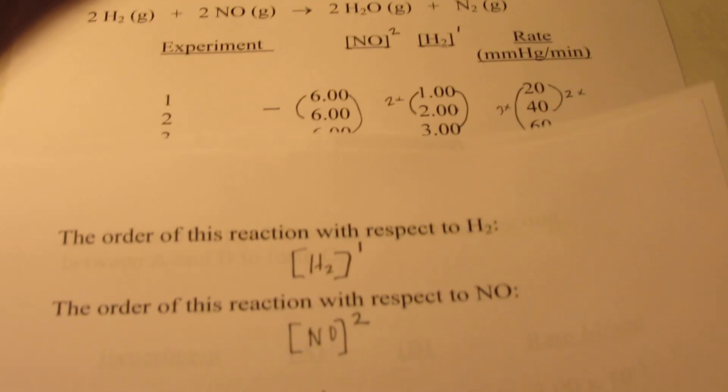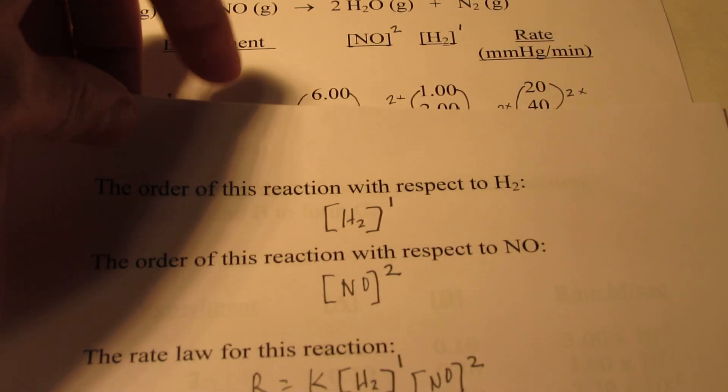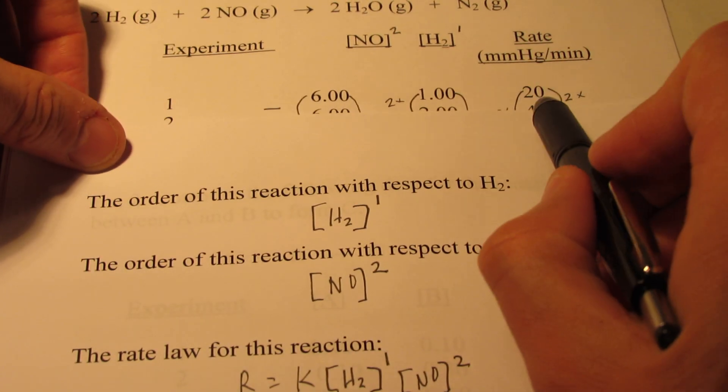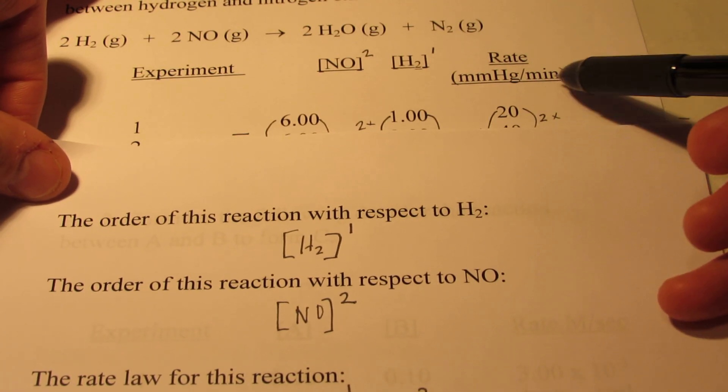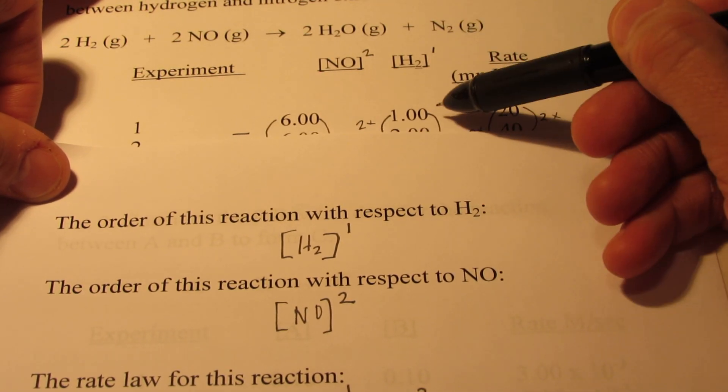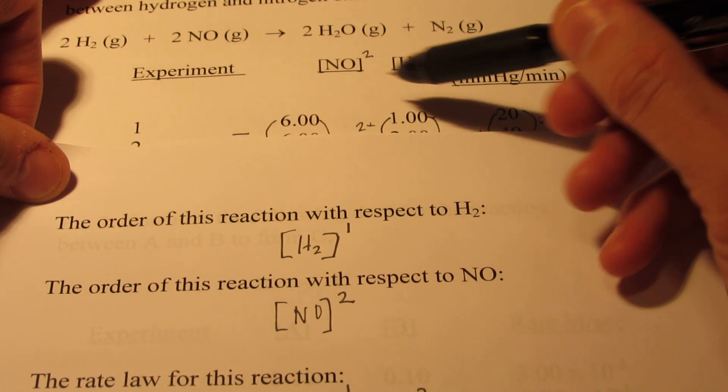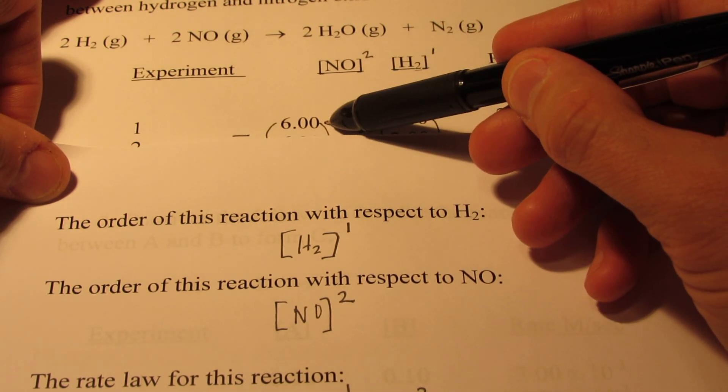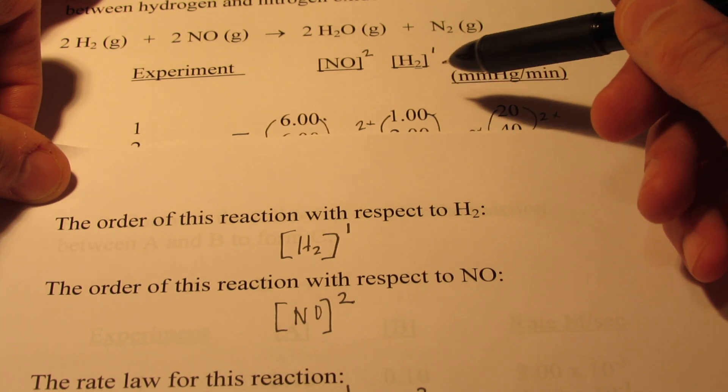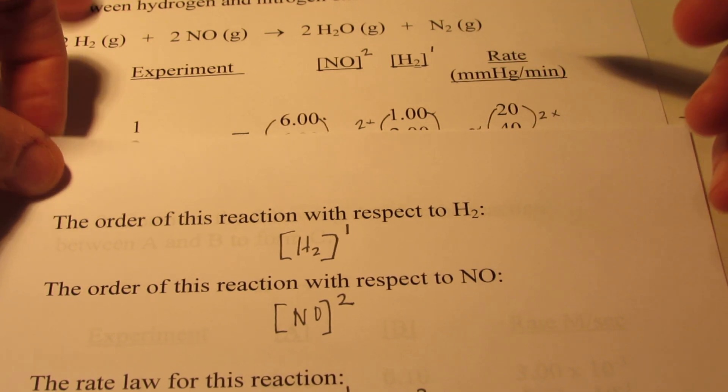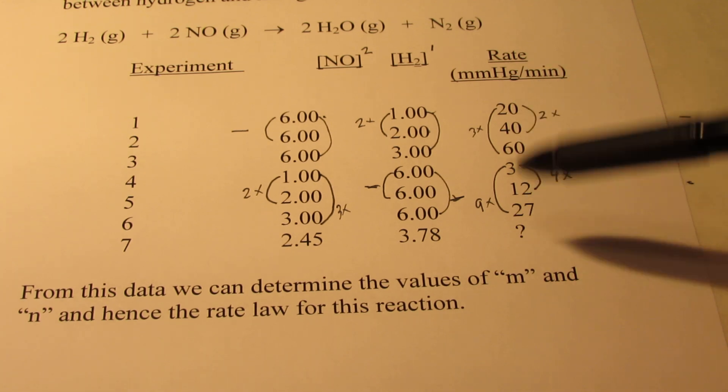I like to use the first experiment when I do these types of problems. Do you notice that I know the rate during the first experiment, 20 millimeters of mercury per minute? I know the concentration of H2 and I know the concentration of NO. So if I'm trying to find the rate constant, it is a constant, it should be the same for any of these experiments.